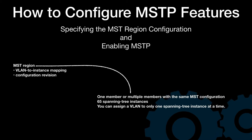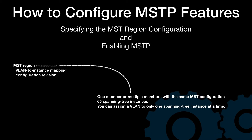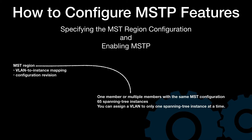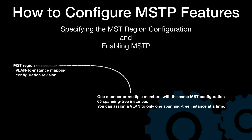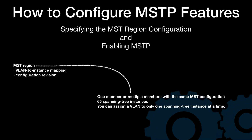Each member must be capable of processing RSTP BPDUs. There is no limit to the number of MST regions in a network, but each region can only support up to 65 spanning tree instances. You can assign a VLAN to only one spanning tree instance at a time.